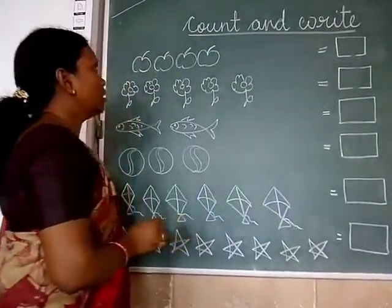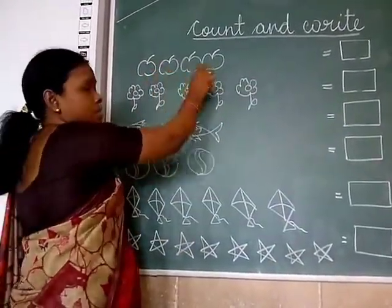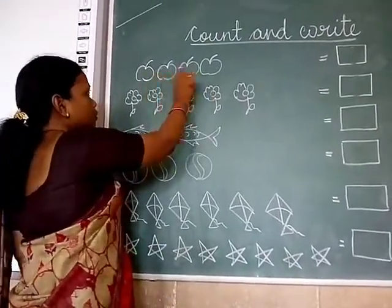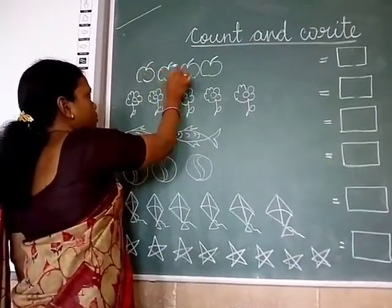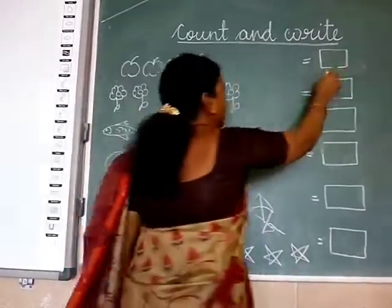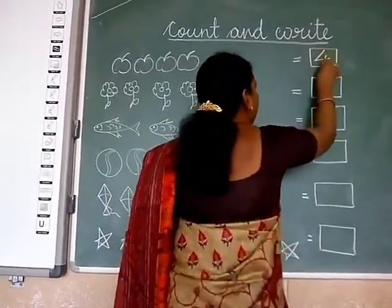So how many apples are there? You have to count it. 1, 2, 3, 4. So you will write here 4.